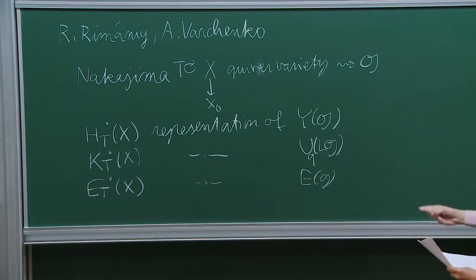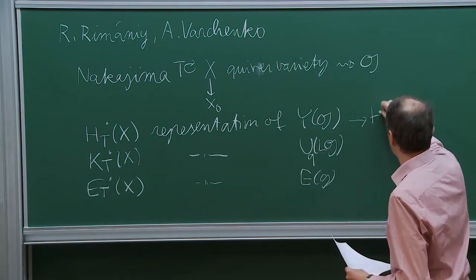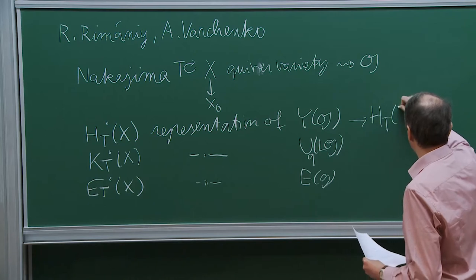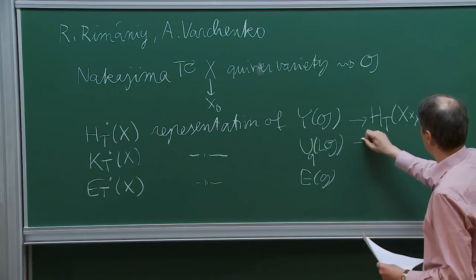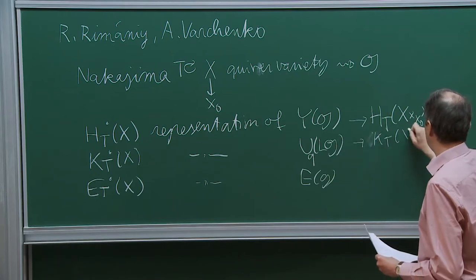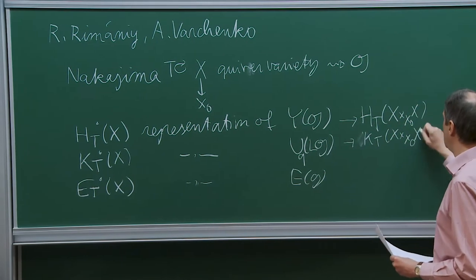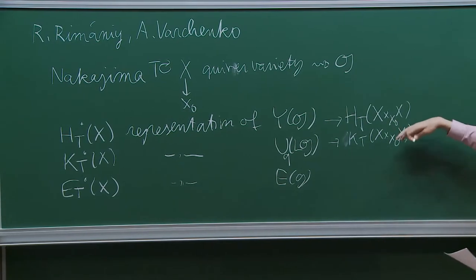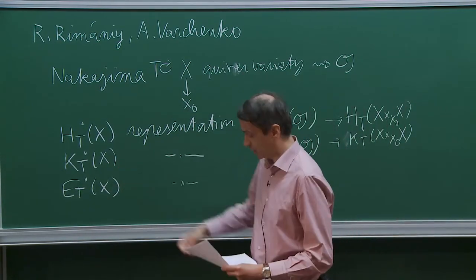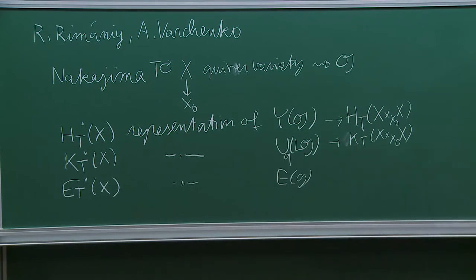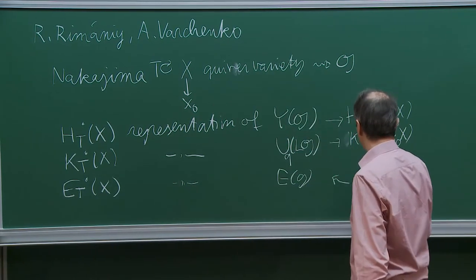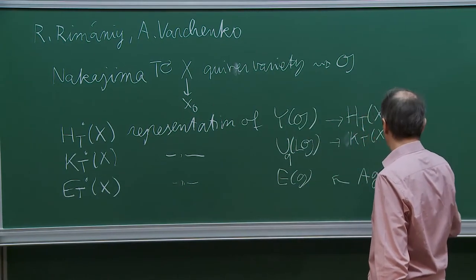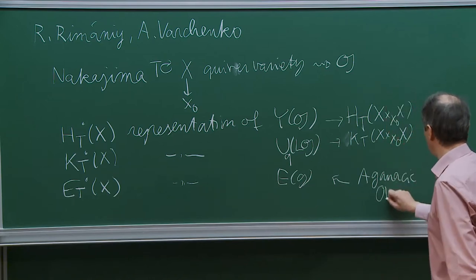The way it works is that you have some map to the equivariant cohomology of X, constructed by Nakajima, and this will act by correspondences on those spaces. We are mostly interested in this part, which is due to Aganacic and Okounkov. We will consider the simplest case where X is the disjoint union of T* of the Grassmannian of k-planes, for k from 0 to n — the case corresponding to G equal to SL2 or GL2.